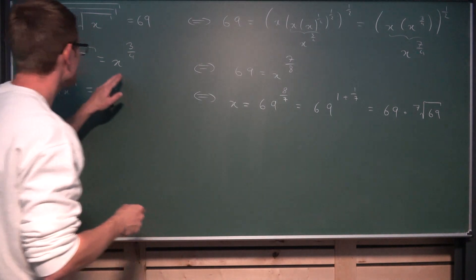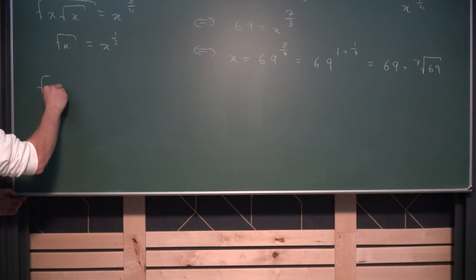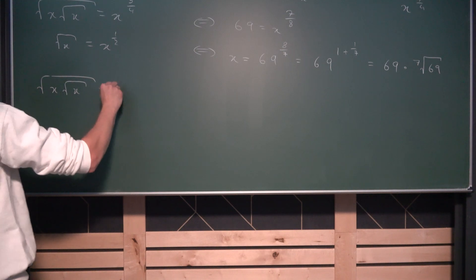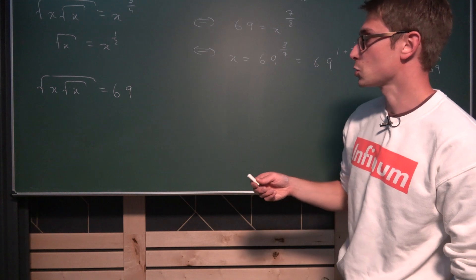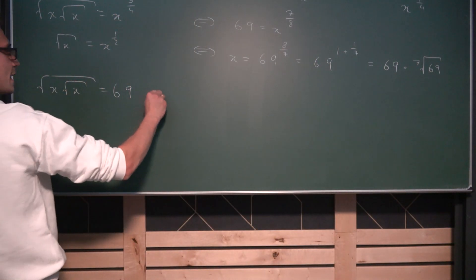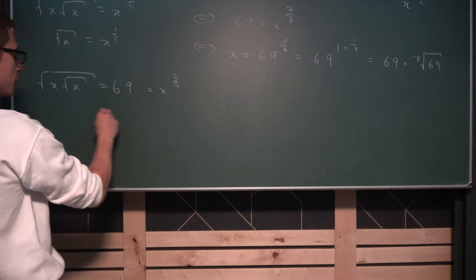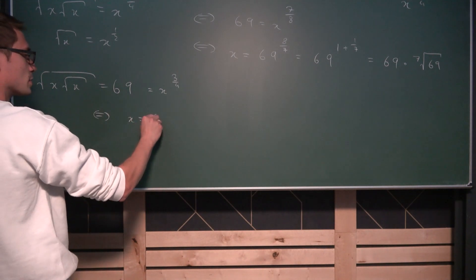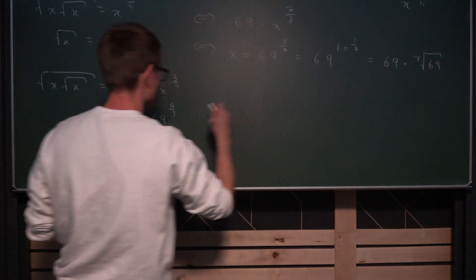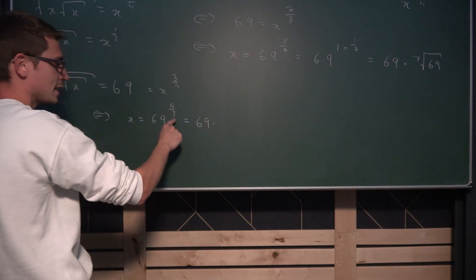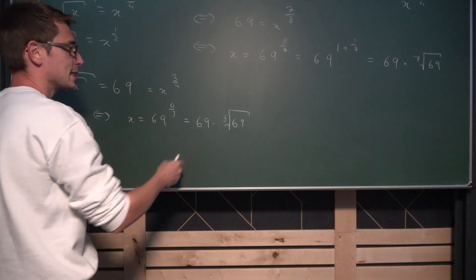Do we have the same thing if we solve just this part — so the square root of x times the square root of x equal to 69? Rewriting, we get x to the 3 over 4, and taking the 4 over 3 power on both sides gives us x equal to 69 to the 4 over 3. By the same arguments, we can rewrite this as 69 times the cube root of 69. So we preserve our 69 once again.